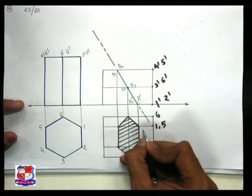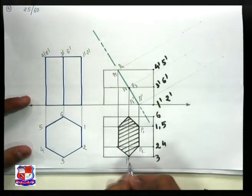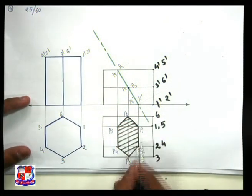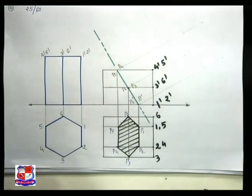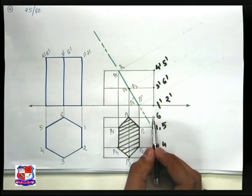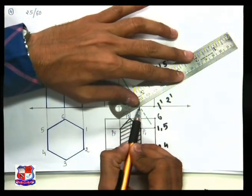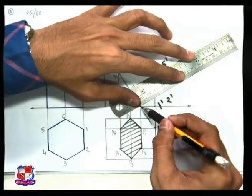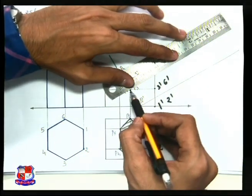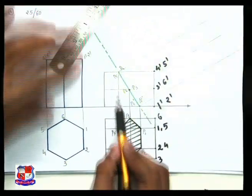In the top view, P1 is here, P2 is here, P3, P4, P5, and P6 — six points are located. From the dash points P1, P2, P3, and P4, draw projection lines such that they make an angle of 90 degrees with the cutting plane. These lines should be perpendicular to the cutting plane line.